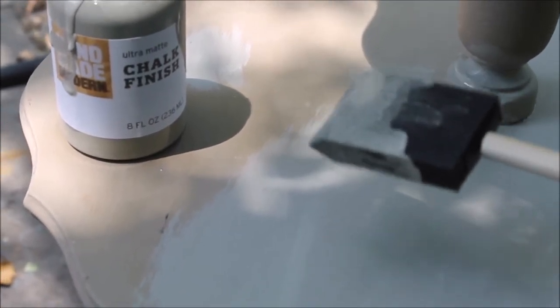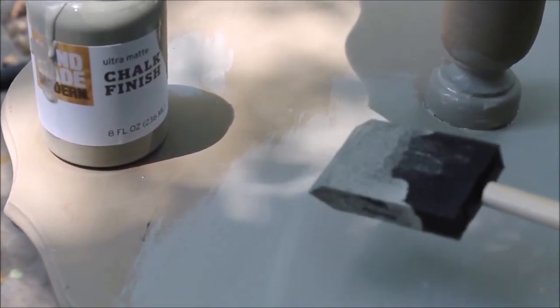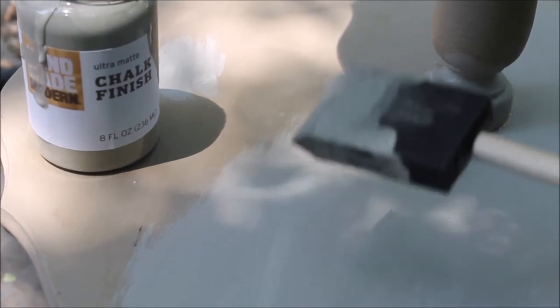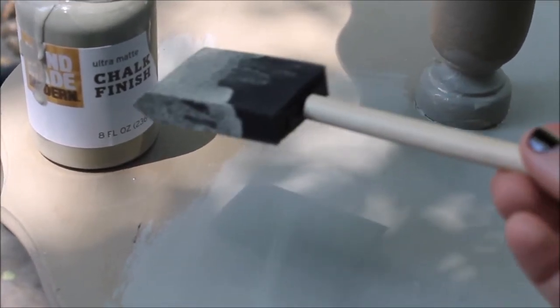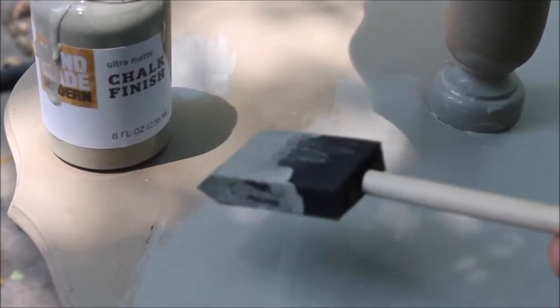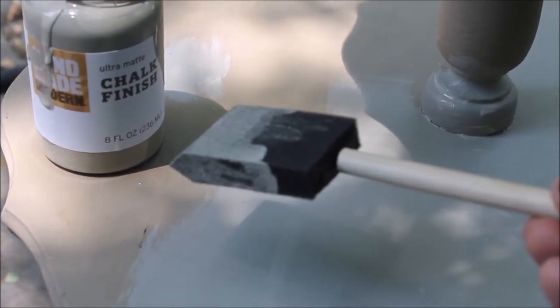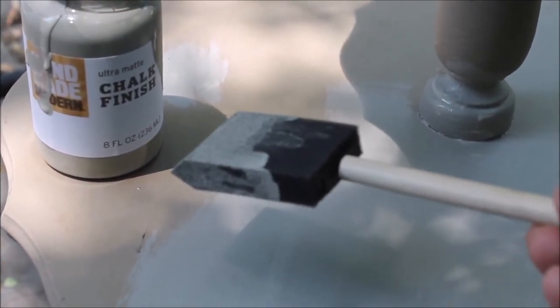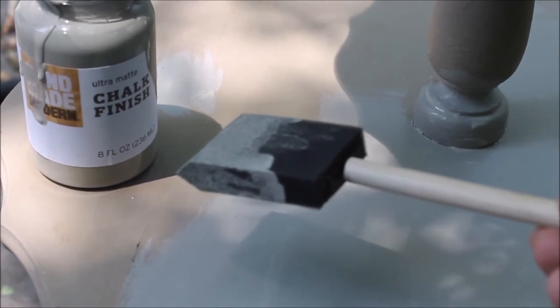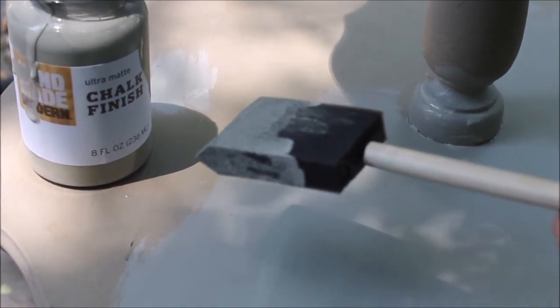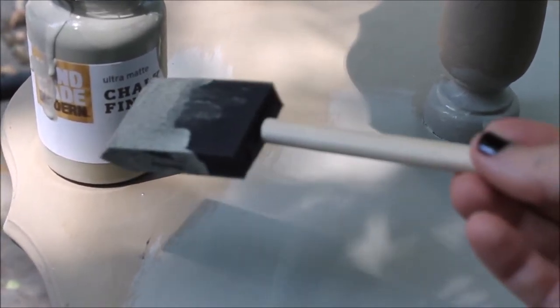I may not even need a second coverage on this, and I really like it. It says ultra matte right on here, so you have to be careful when you're looking through the different selections. Some of them are actually satin, so there's a variety of different types of chalk paint. You have to be careful what kind of finish you get.